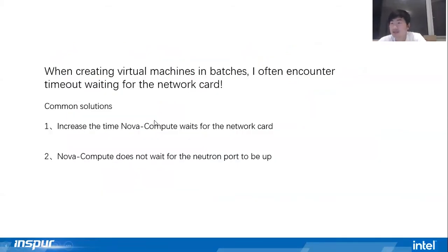In large-scale testing, an important test scenario is the concurrent creation of a large number of virtual machines for networking with Neutron. It will create ports in large quantities based on the scale of the cluster. We were able to keep the code unchanged and only change the parameters of the Neutron server, which was able to meet the demand of concurrent port creation, and there were no more port creation incidents.